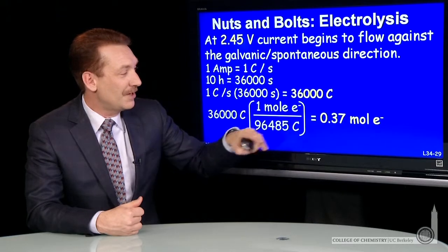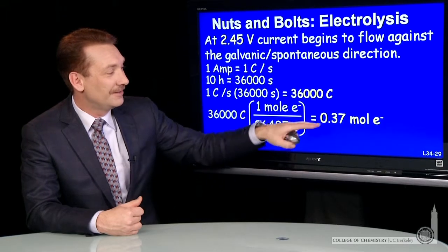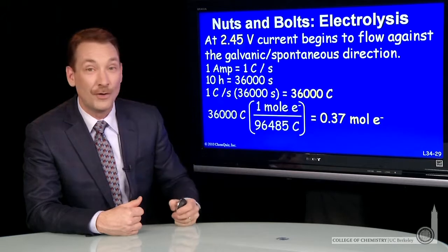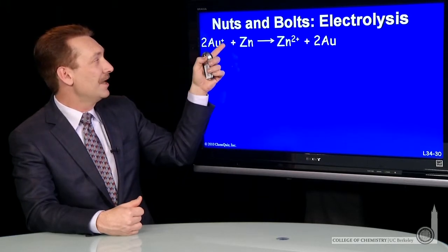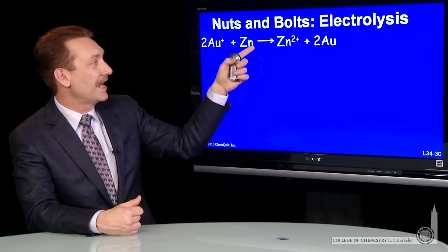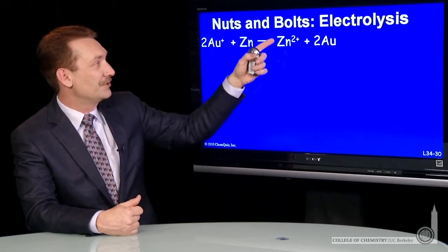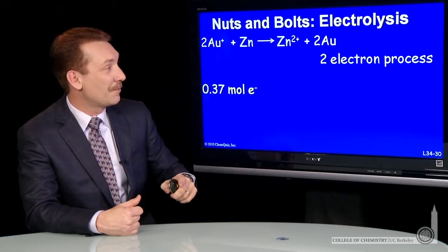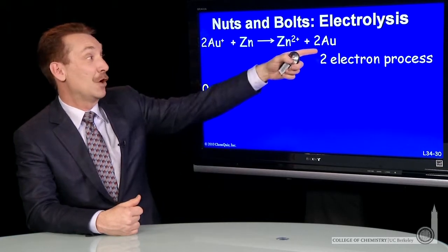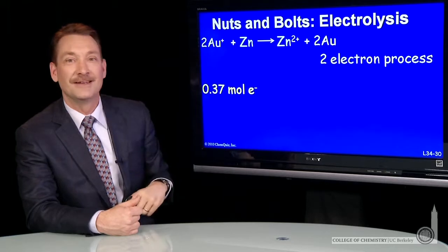Well, how much zinc metal does that 0.37 moles of electrons produce? Let's look back at our chemical reaction. It's gold ions and zinc producing zinc ions and gold metal. It's a two-electron process that I'm going to make go in reverse to make zinc metal.